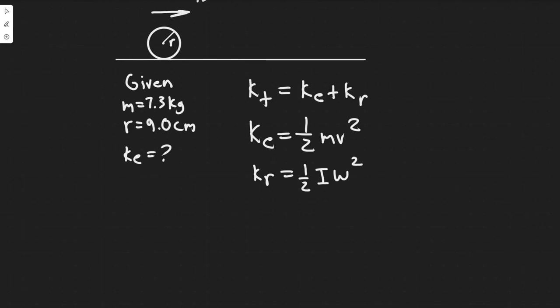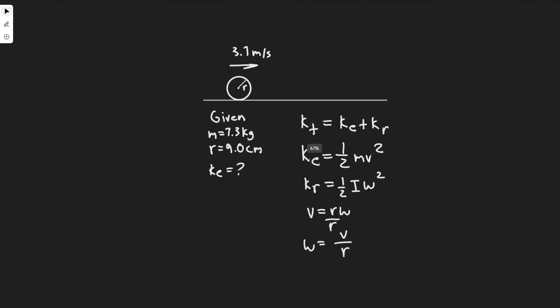Keep in mind omega, the formula for it is V equals r omega. So if we wanted omega, we would divide by r. So omega is equal to the velocity divided by the radius of the object.